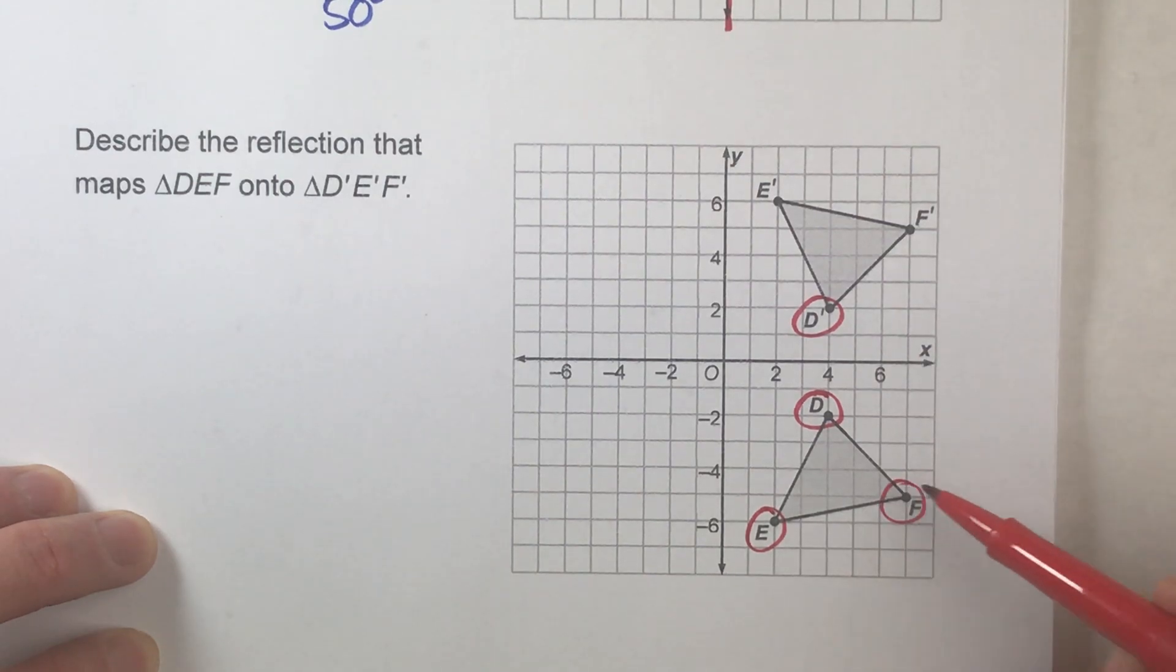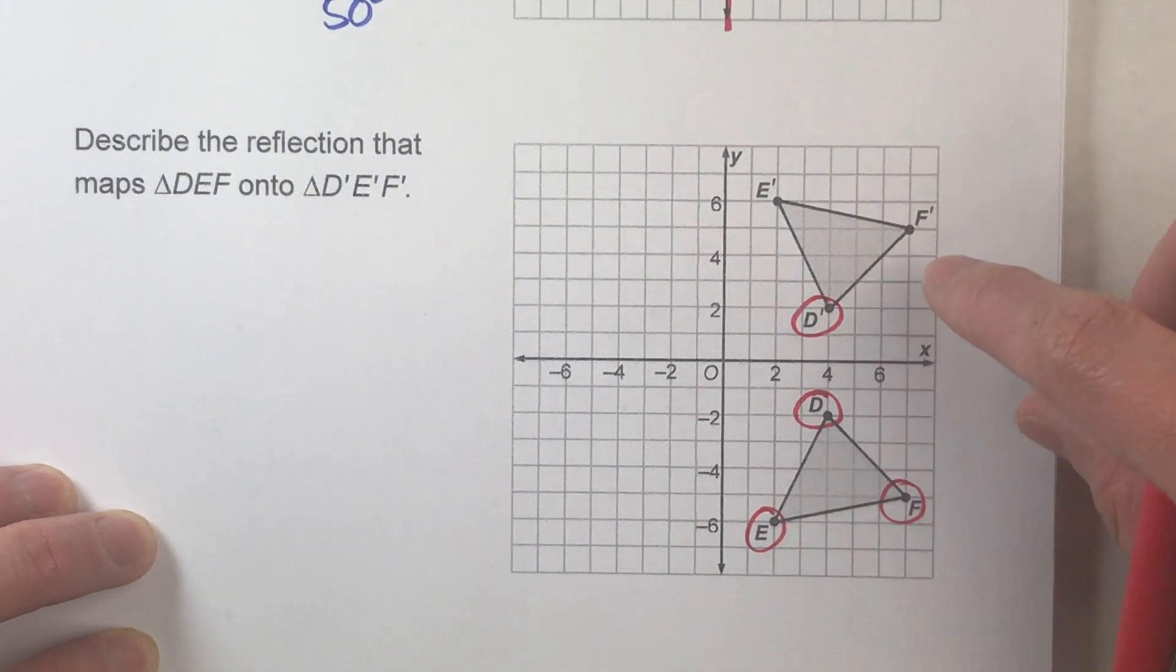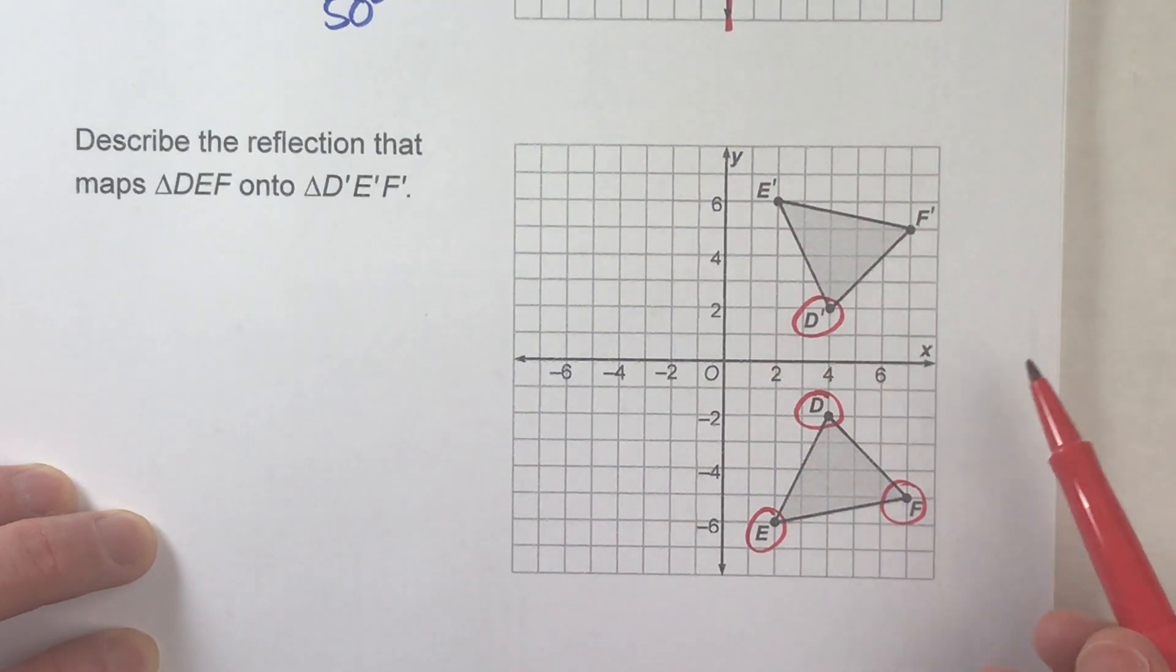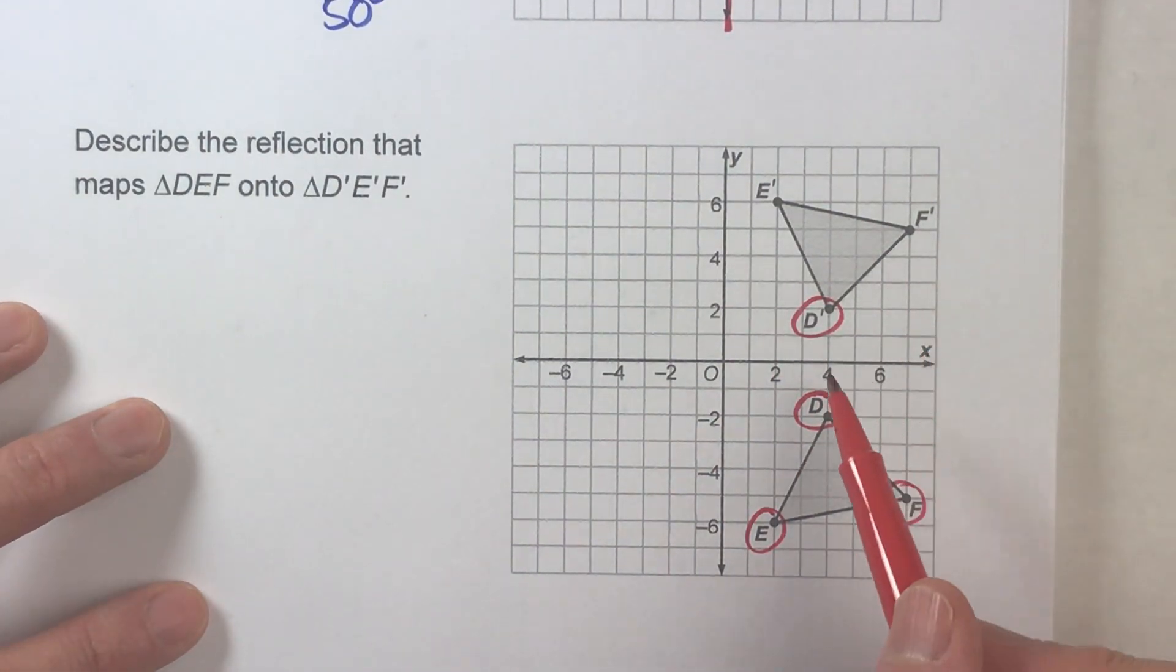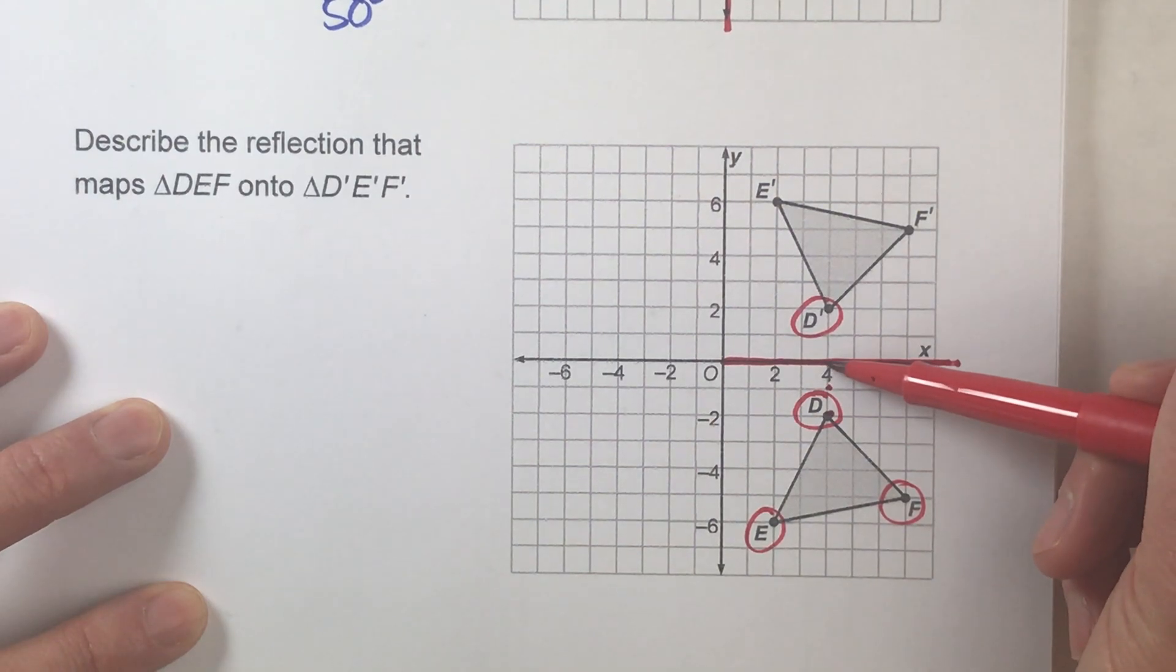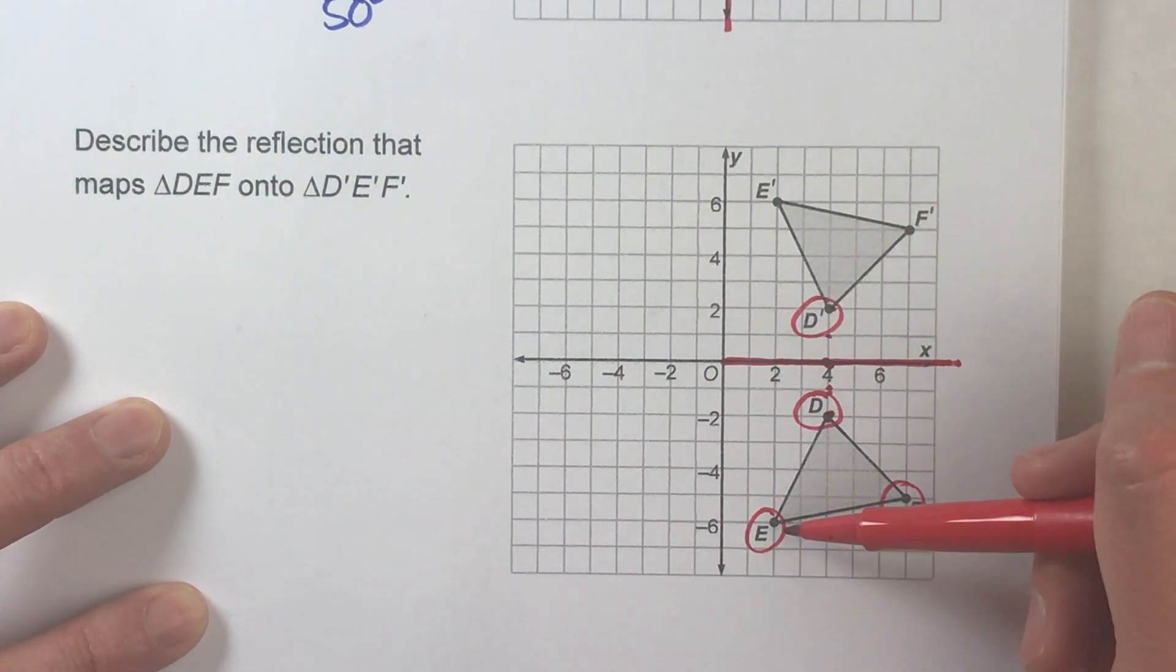The second thing you need to know is since it's a reflection, notice DEF are oriented this way, whereas the reflected one is upside down. And notice, it's vertically upside down. That means my line of reflection is going to go right in between it. And if you really pay attention, it's got to be right here. Because look, D is two steps away from this line, the x-axis, and D prime is two steps away from the x-axis, but on the other side.